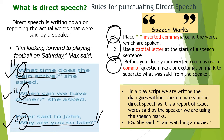Third point: before you close your inverted commas, use a comma, question mark or exclamation mark to separate what was said from the speaker. In the first example, 'What time does the train arrive?' — it is a form of a question, so put a question mark and then close the inverted comma. If it is an exclamatory sentence, you have to put an exclamation mark. Please note that in a play script, we write dialogues without speech marks, but in direct speech, as it is a report of the exact words said by the speaker, you have to use speech marks.